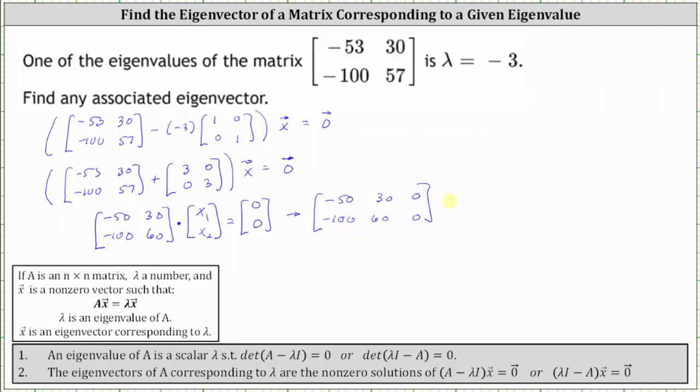Next, we write the augmented matrix in reduced row echelon form, which I've already done to save time. The first row is one, negative three-fifths, zero, and the second row is a row of zeros.